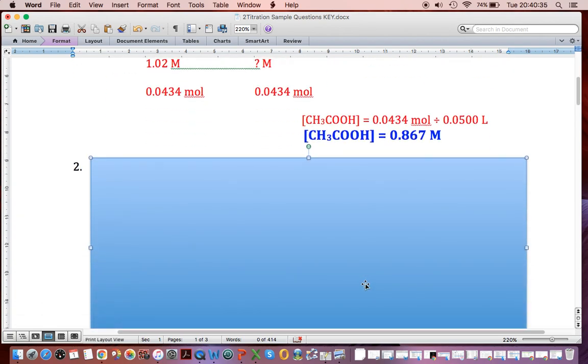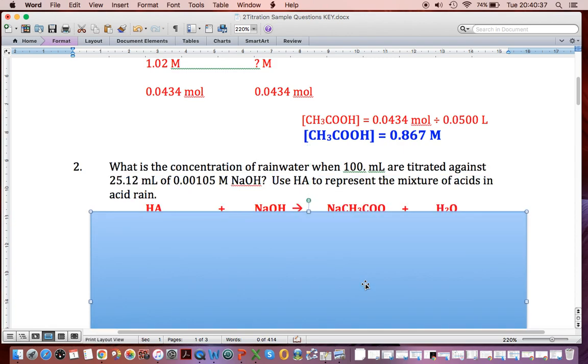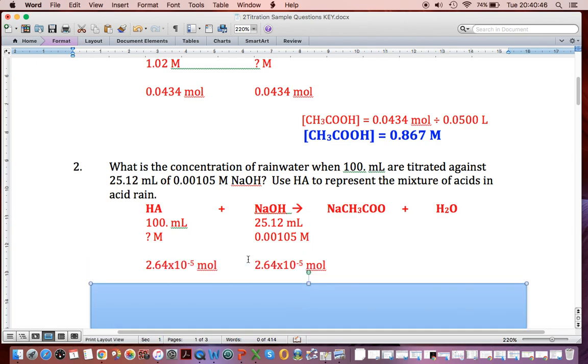Number two, same deal. We have our NaOH. HA is going to be used to symbolize the acid, and that's a common thing we do in this section. Just like the last one, volume and concentration we know for the NaOH. We don't know for the HA.